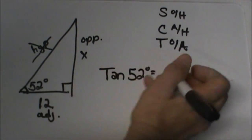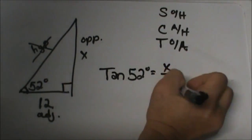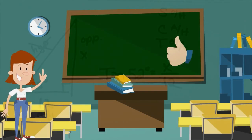Opposite is x - we don't know that side - adjacent is 12. And that is how we set it up. So there's our first, there's the first part.